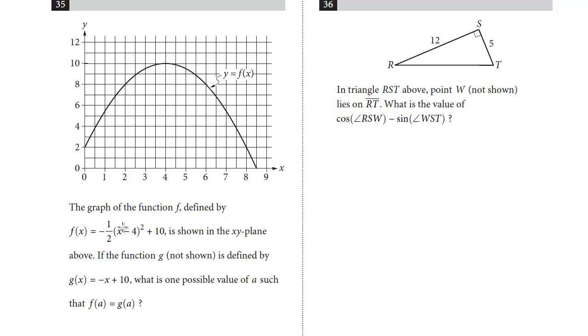The graph of the function f is defined by f(x). This equation is shown in the xy-plane. So here's y equals f(x). The function g, not shown, is defined by g(x) equals negative x plus 10. What is one positive value of a such that f(a) equals g(a)?